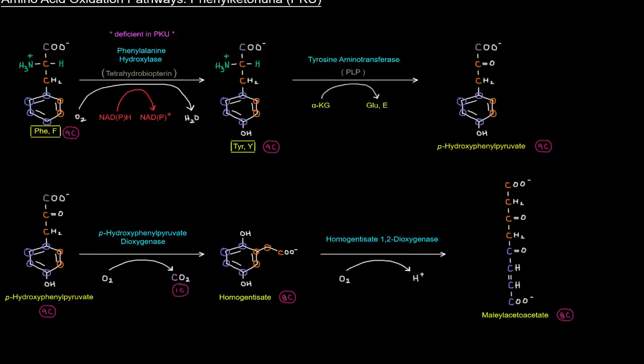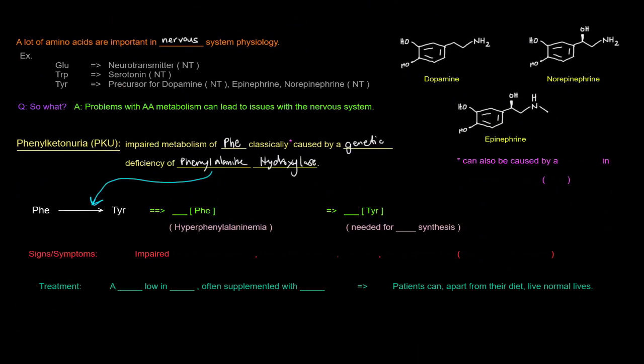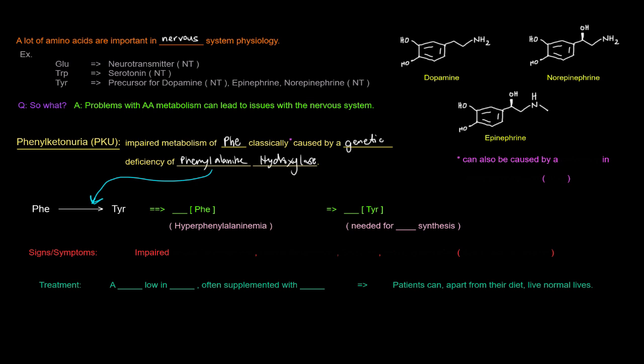I forgot to show here that cofactor tetrahydrobiopterin, which is also actually important here. The point is that this enzyme is deficient in PKU. If this reaction can't happen, if the enzyme that catalyzes this forward reaction is deficient, that means that this reaction is not going to happen, or not going to happen enough. What ends up happening is that the phenylalanine will build up because it's not being converted into tyrosine. So we have increased concentration of phenylalanine, called hyperphenylalaninemia. And then we have decreased concentration of tyrosine because we're not making it from phenylalanine. That's a problem because the tyrosine is needed for the neurotransmitter synthesis that we mentioned before.